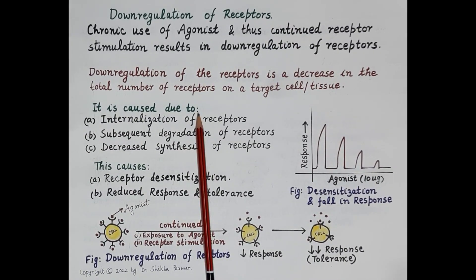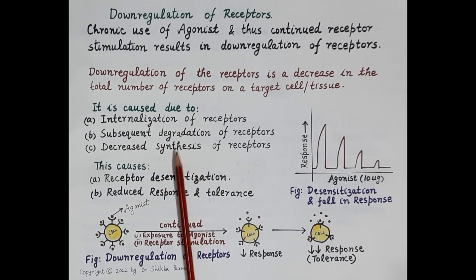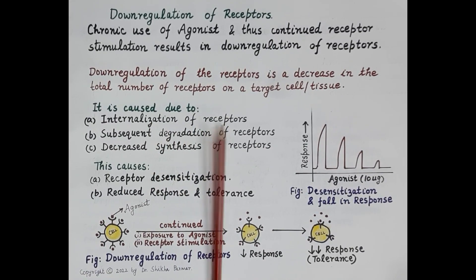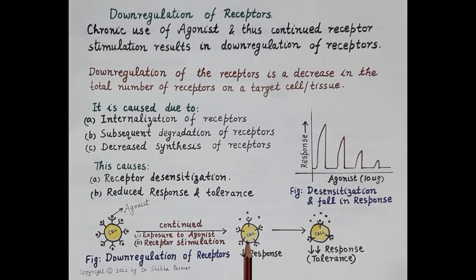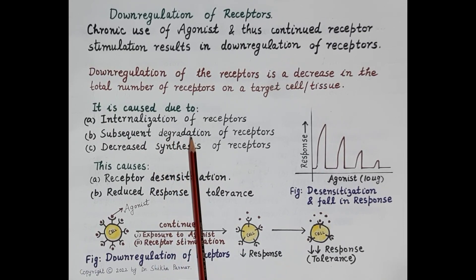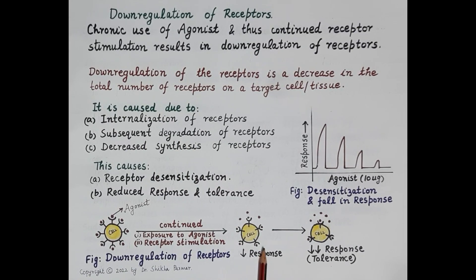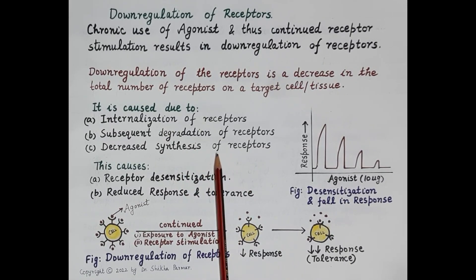Down regulation is caused by three main reasons. First, chronic use of agonist causes internalization of receptors — receptors move from the plasma membrane to the inside of the cell, making them less responsive or less sensitive. Further internalization causes degradation or destruction of receptors, reducing their number. Second, chronic use of agonist also decreases synthesis of new receptors. Overall, this results in a reduced number of receptors — down regulation.